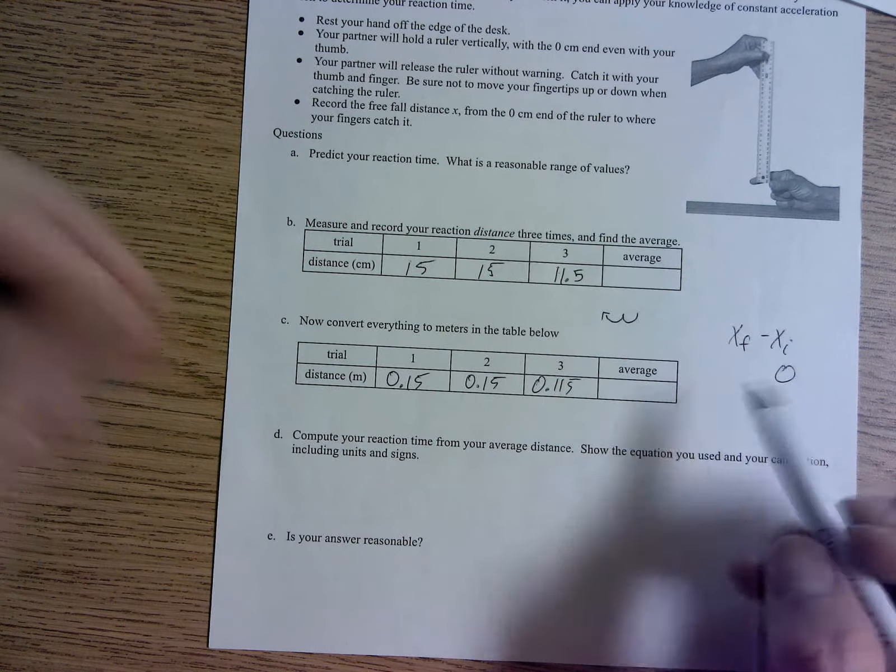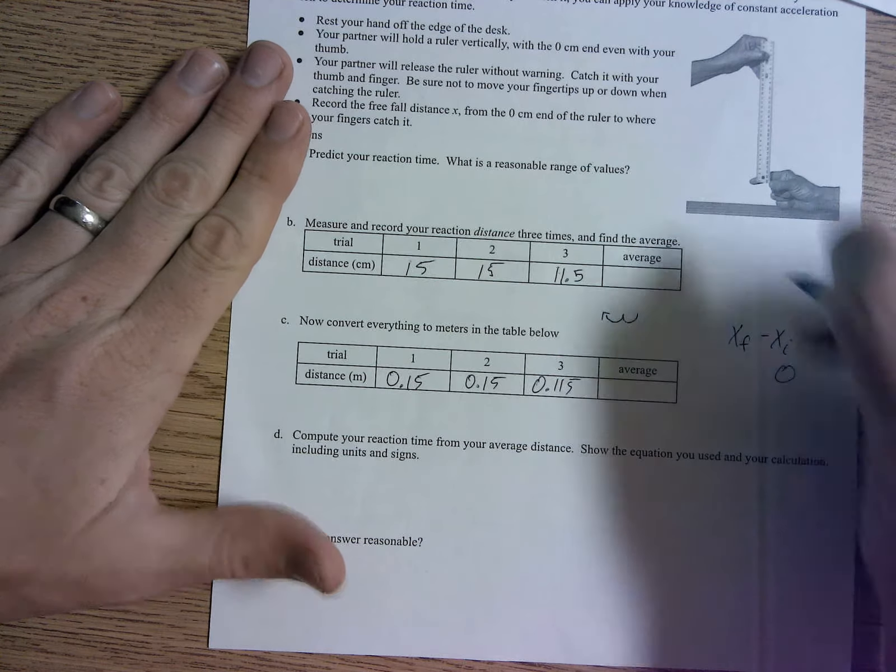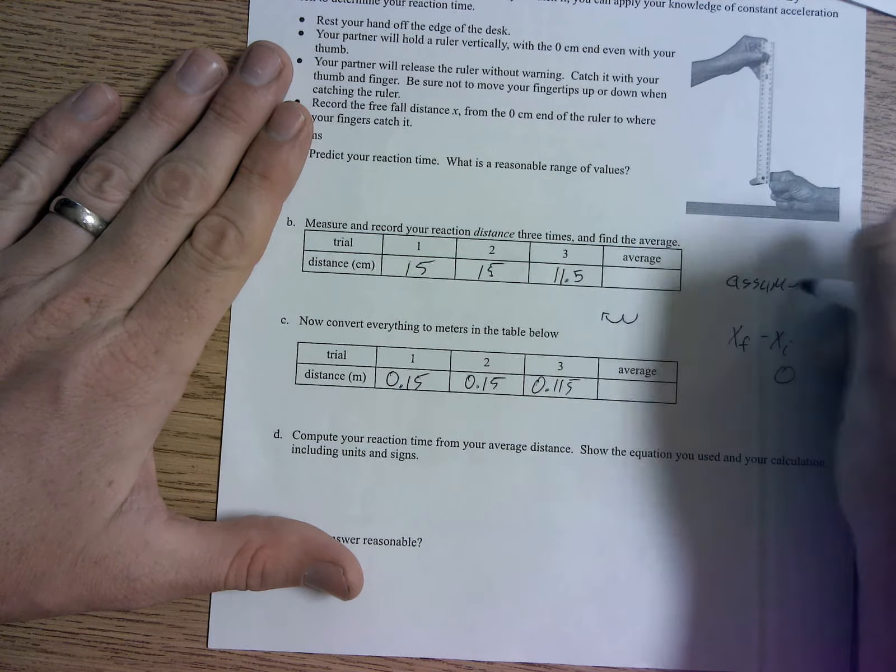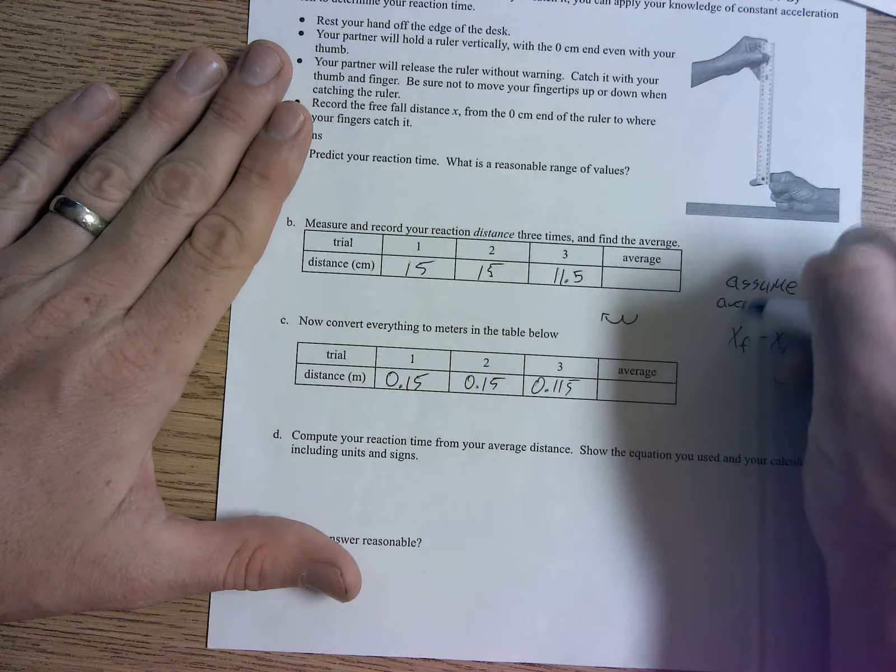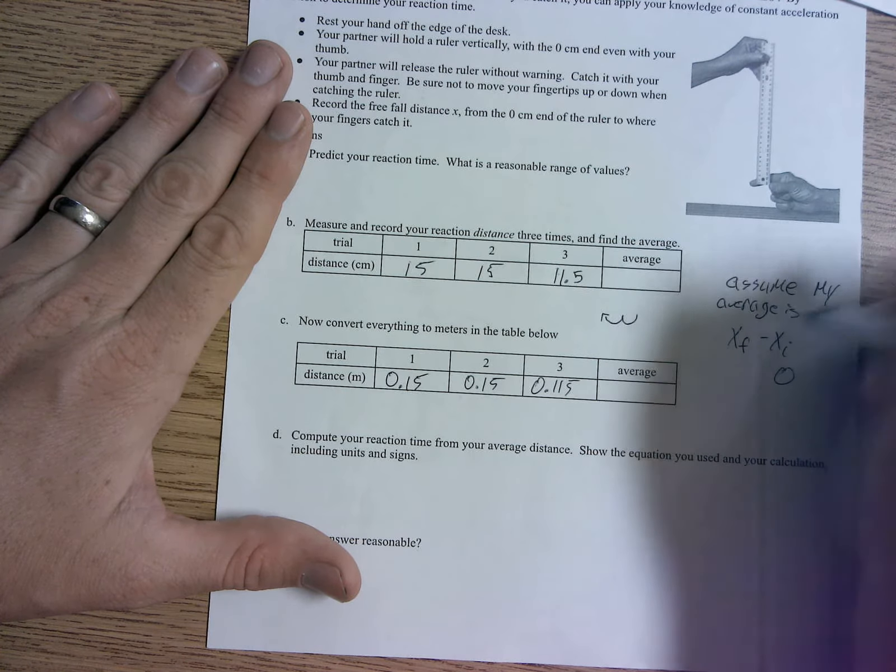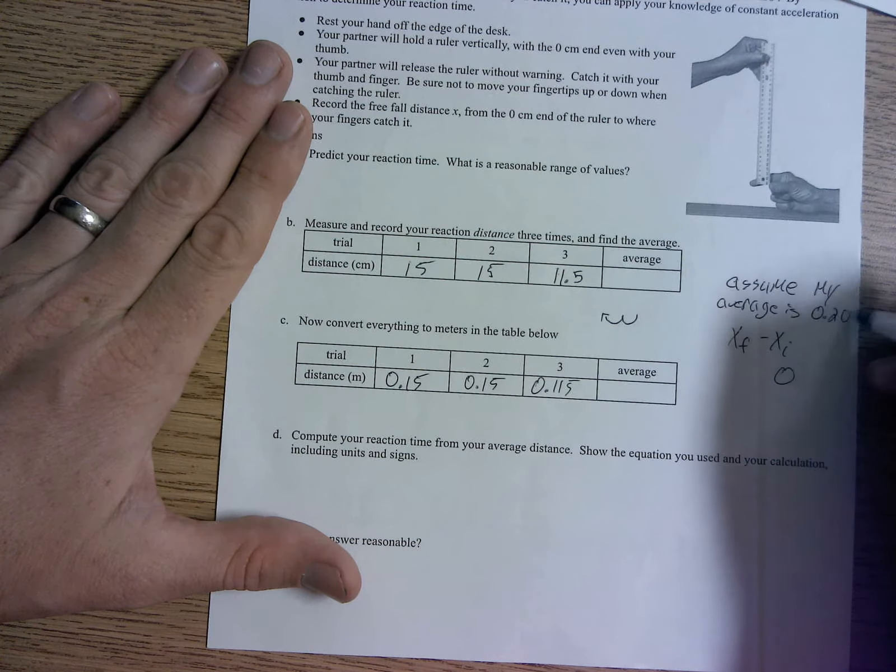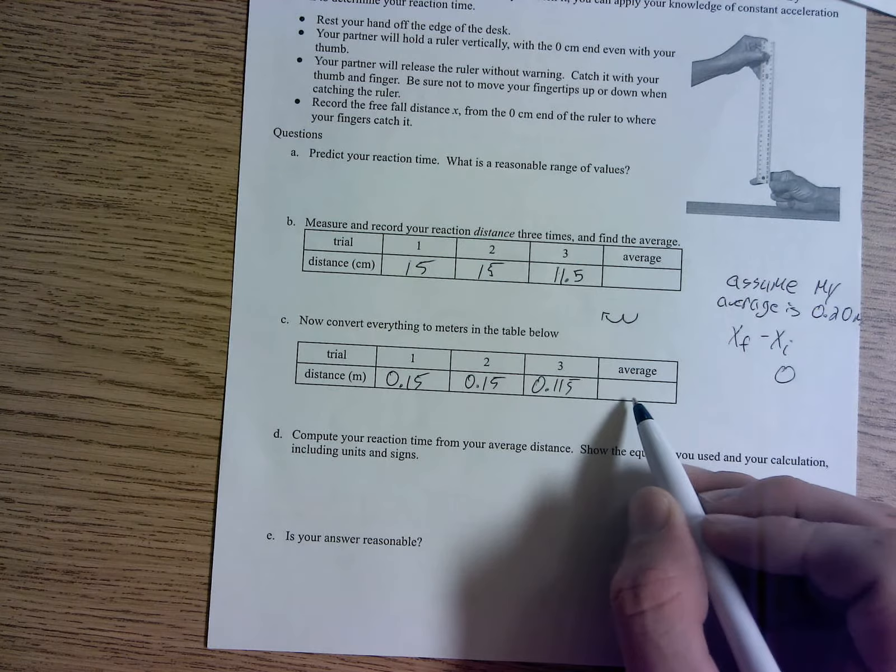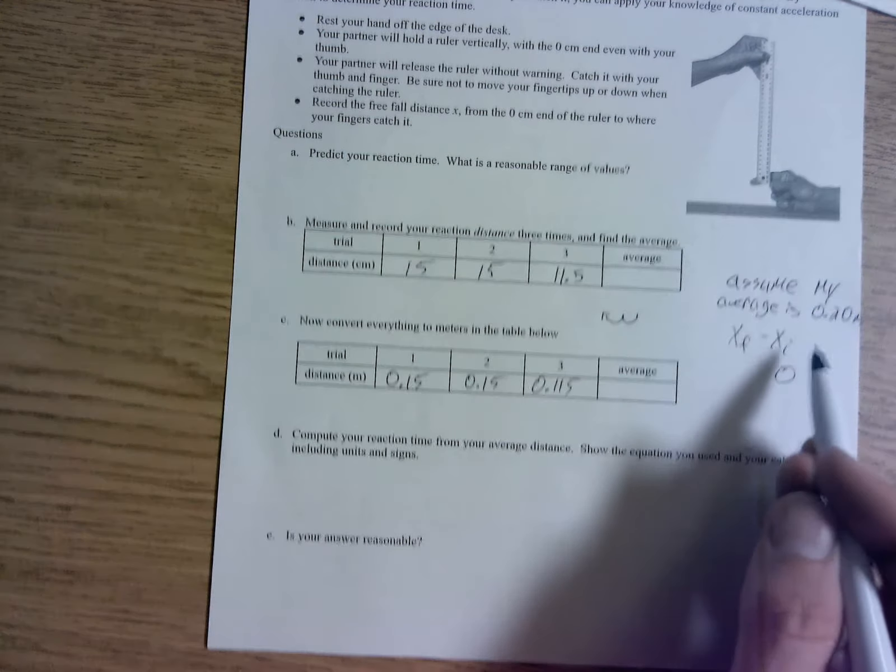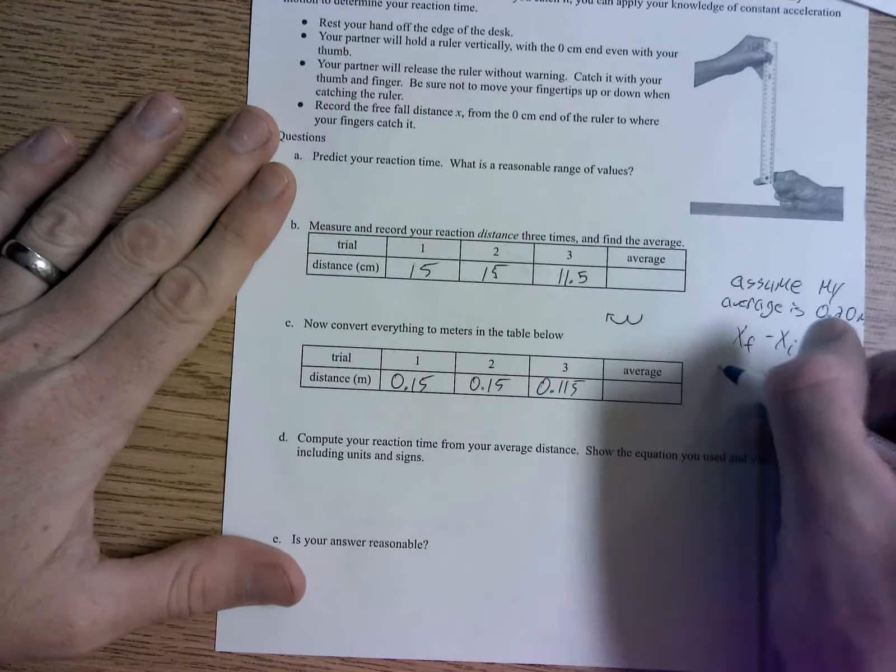I'm going to assume that my average is 0.20 meters, and that way I'm not doing the work for you, because you should have a different answer for your average, and I don't want to give it away but I do want to help you out.